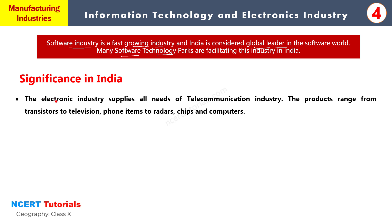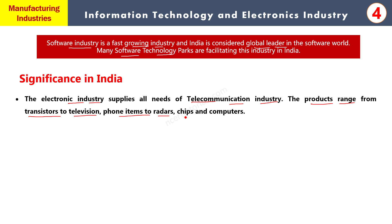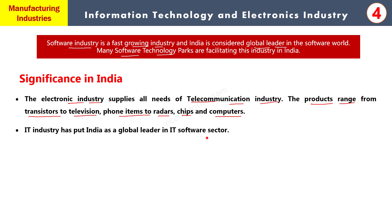जो electronics industry है वो उन products को तैयार करती है जिनकी जरूरत telecommunication industry को पड़ती है। For example, mobile में जो chip और hardware इस्तेमाल होता है वो electronics industry supply करती है। इन products की range में transistors, television sets, phone items, radars जो defence system का हिस्सा हैं, chips, computers - so many things are supplied by electronics industry। IT industry has put India as a global leader in IT software sector - आज भारत एक super power माना जाता है software world में।